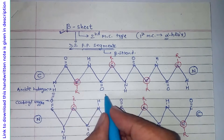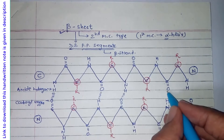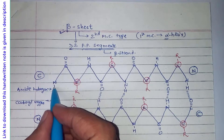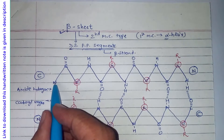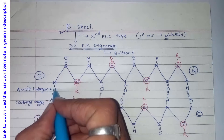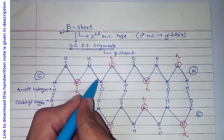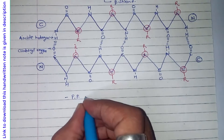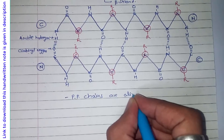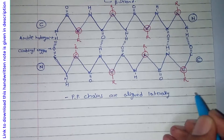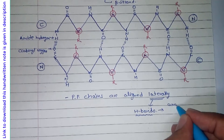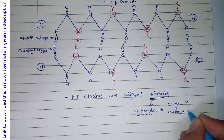Hydrogen bonds form similarly at multiple positions: between this hydrogen and oxygen, here also, and here also. As you can see, at all positions the hydrogen is always the amide hydrogen and the oxygen is always the carbonyl oxygen. Both of these are part of a peptide bond. So we can say that the polypeptide chains are aligned laterally and further stabilized by hydrogen bonds between amide hydrogen and carbonyl oxygen.